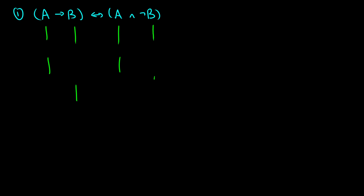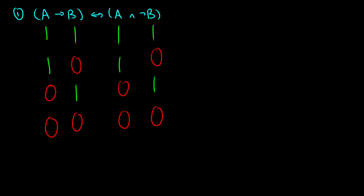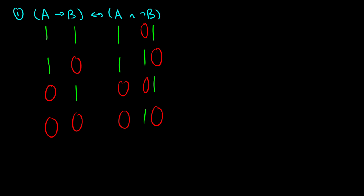I'm going to set up all these truth tables. For A: 1, 1, 0, 0. For B: 1, 0, 1, 0. First, I'm going to deal with the negation on B — taking the information in the B column and flipping it to get the negation, giving us 0, 1, 0, 1.